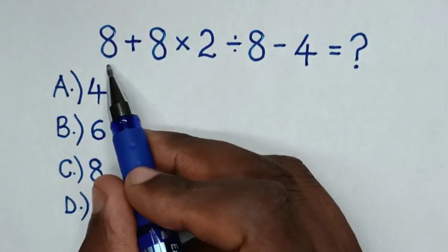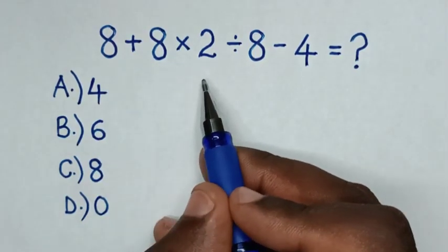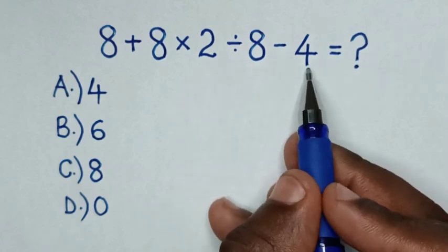Hello. How to solve 8 plus 8 times 2 divided by 8 minus 4.